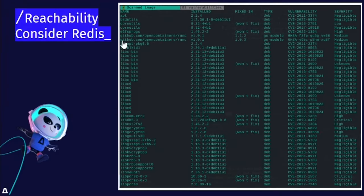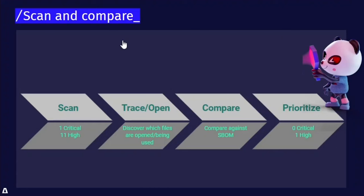A more current example shows that scanning Redis naively with a static scanner, we get one critical vulnerability and 11 high — the common practice is these are the ones you need to fix as soon as possible. Using the trace open gadget from Inspector Gadget, Cubescape was able to identify which files are touched by the container during runtime. This scan gave us zero criticals and one high. Less packages are actually used in runtime, and it created a modified SBOM without the files that are not accessed — resulting in a prioritized list of vulnerabilities that can hurt us today.